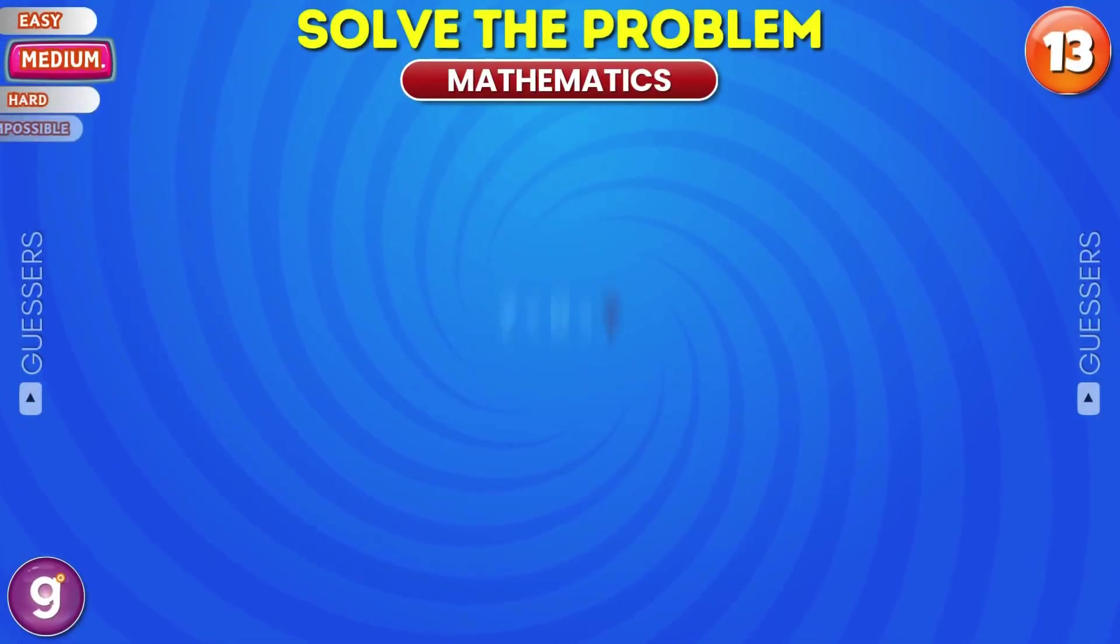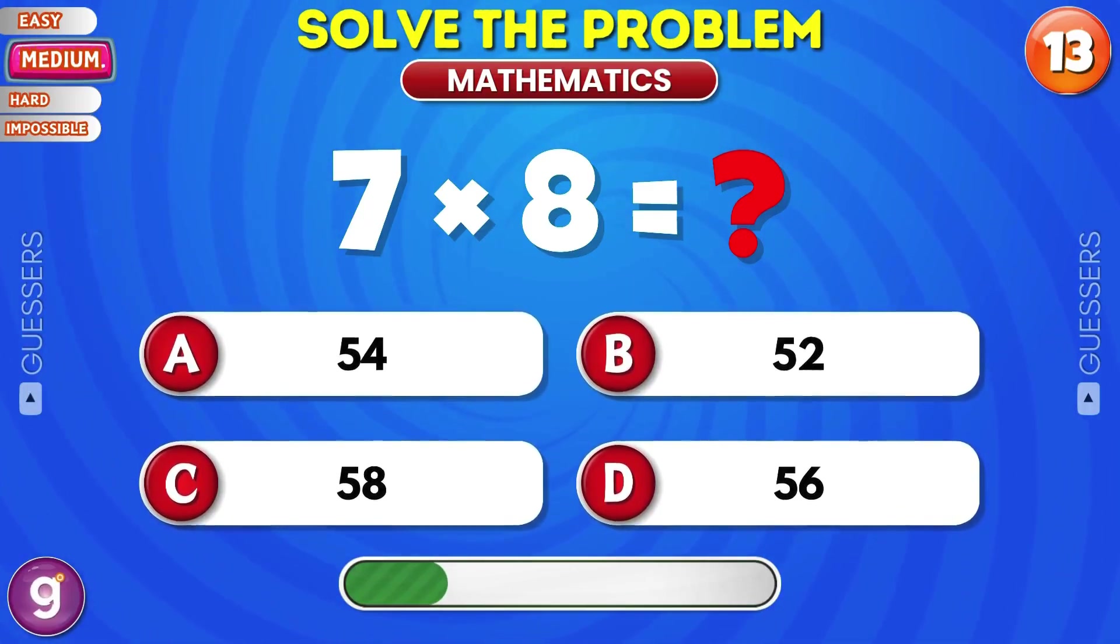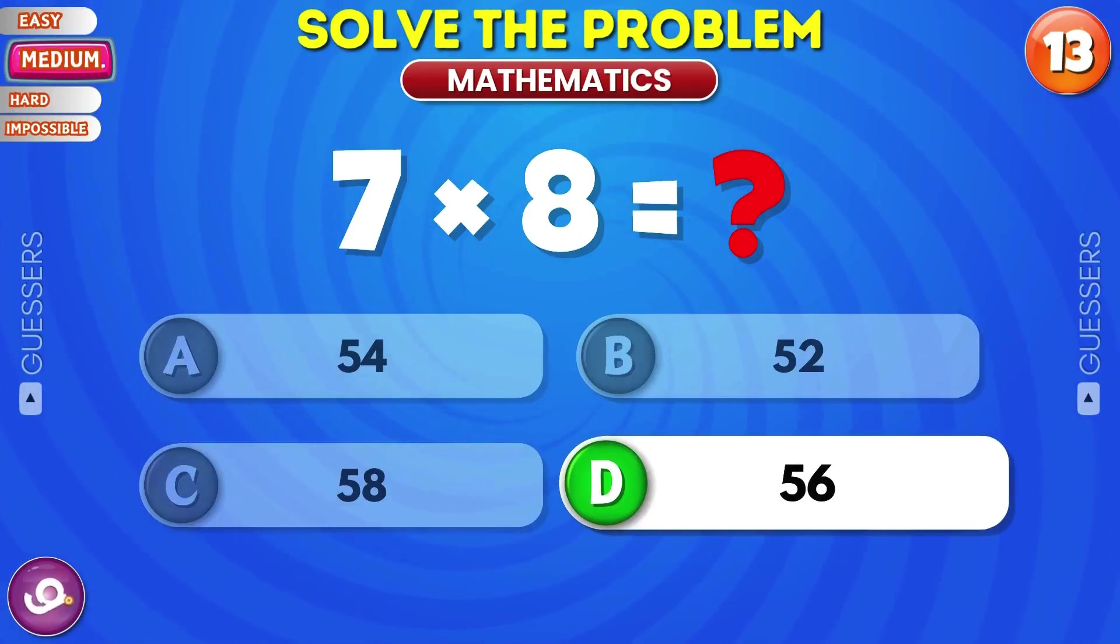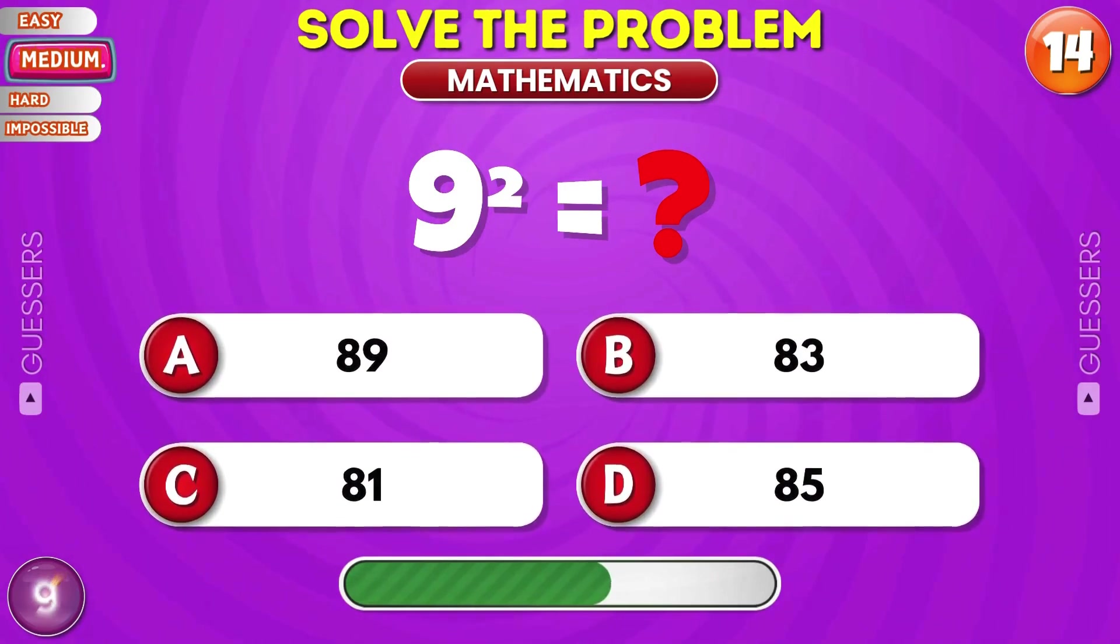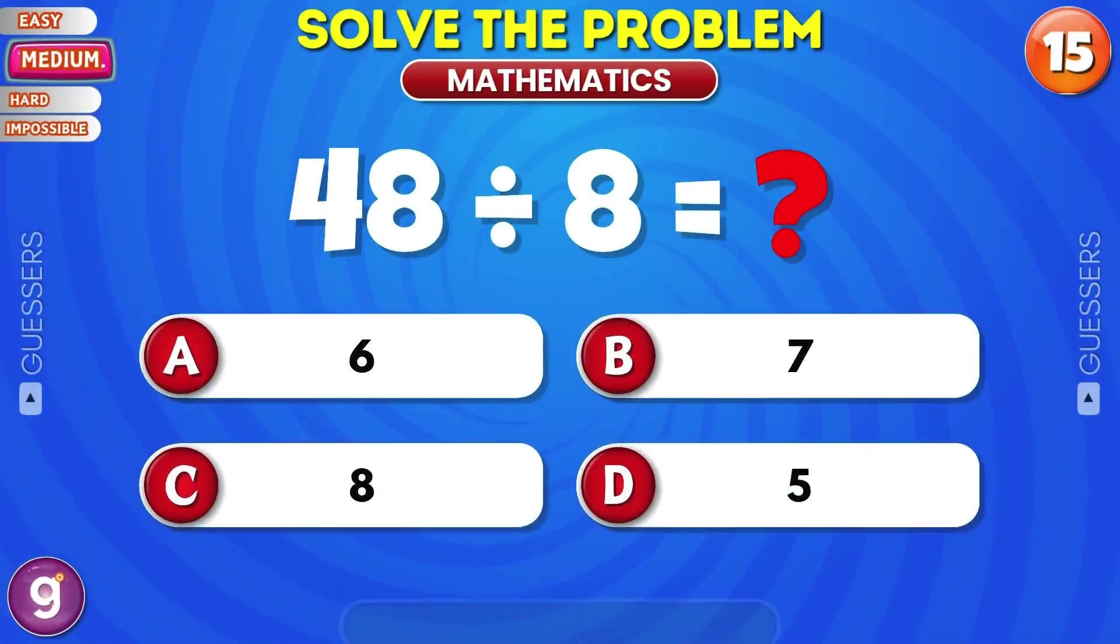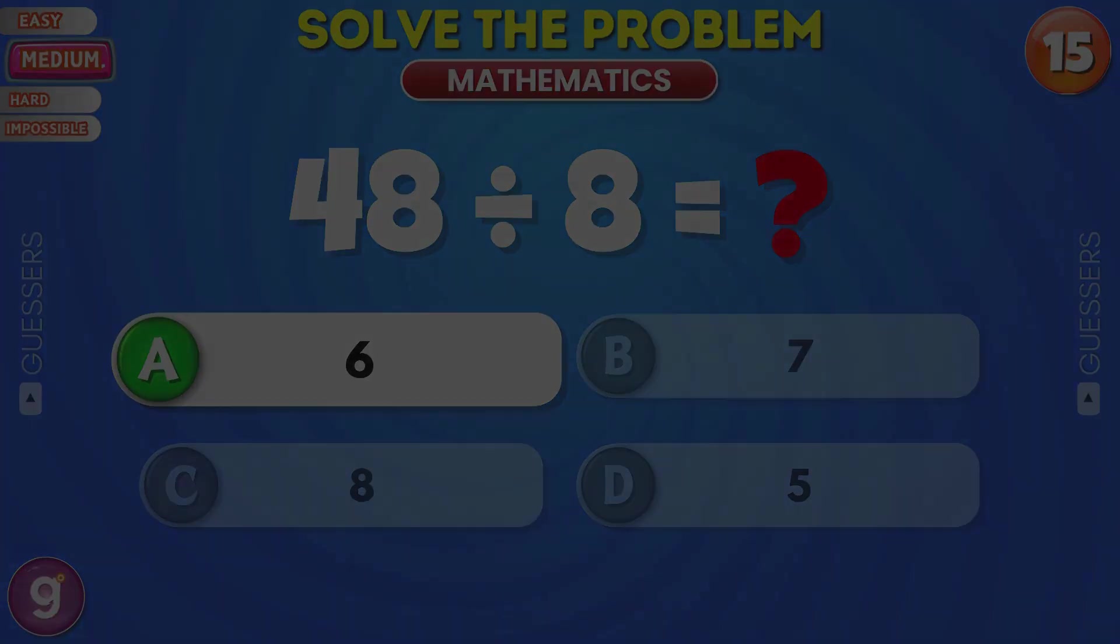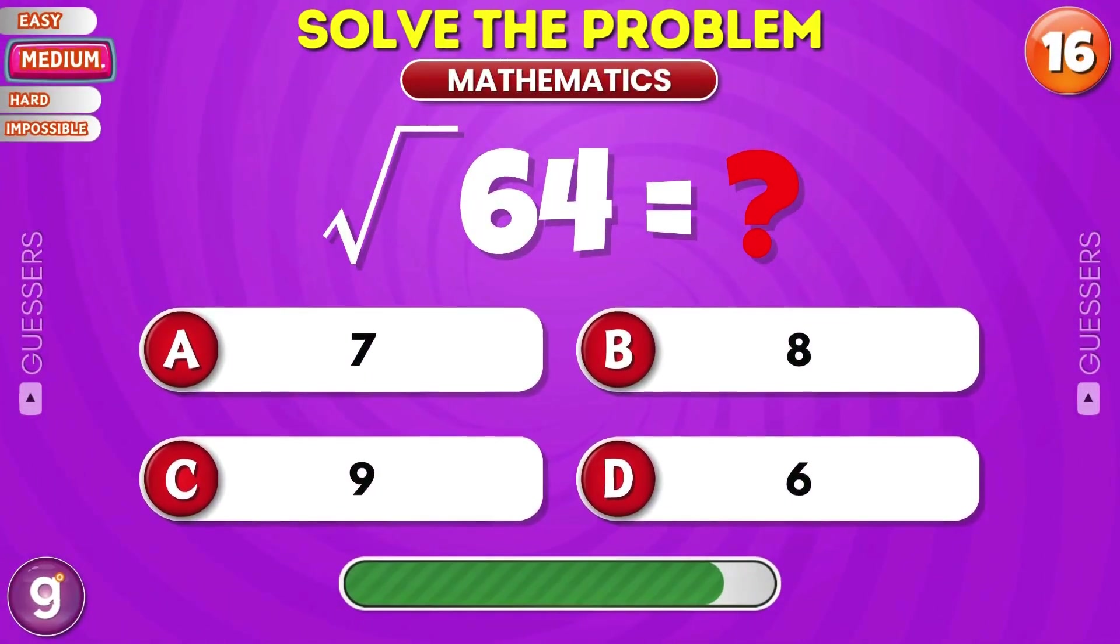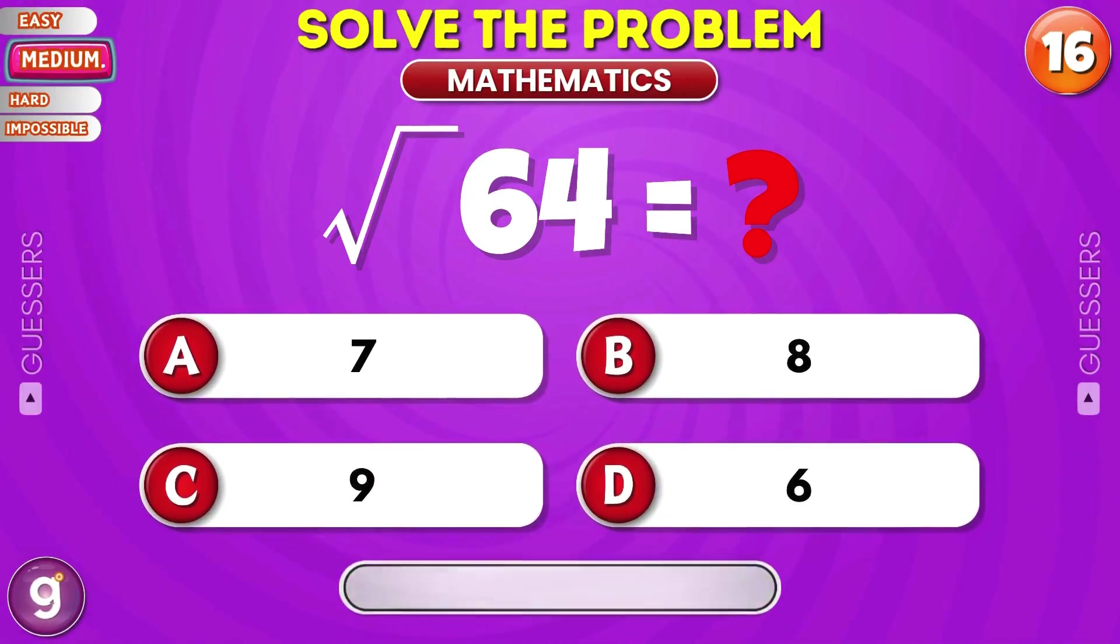Let's move to the medium level. What's the result of 7 into 8? 56. What is the square of 9? 81. What's 48 divided by 8? 6. Solve the equation. The answer is 8.